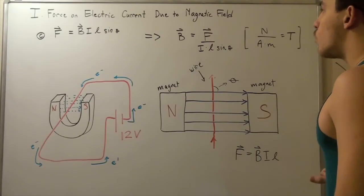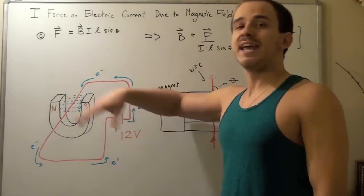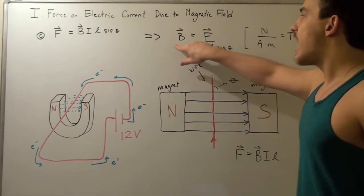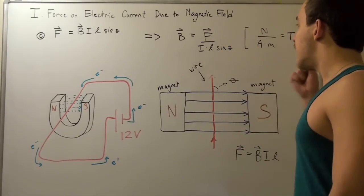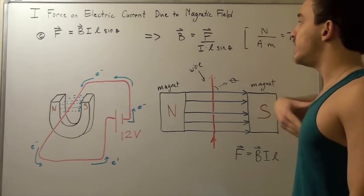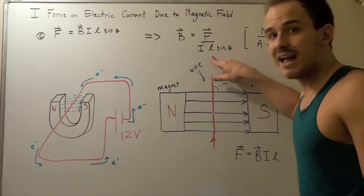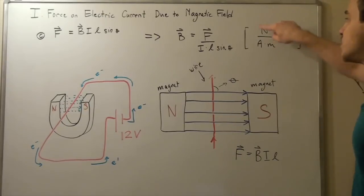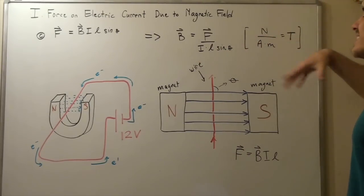Notice one more thing. Knowing this formula, we can now define our magnetic field in a second way. Rearranging the equation gives: B = F / (I·L·sinθ). When θ = 90°, this simplifies to B = F / (I·L), meaning the units of the magnetic field are Newtons per Ampere·meter, and this unit is known as the Tesla.